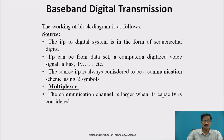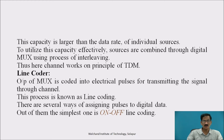Multiplexer: The communication channel has a larger capacity than the data rate of individual sources. To utilize this capacity effectively, sources are combined through a digital MUX (multiplexer) using the process of interleaving. The channel thus works on the principle of time division multiplexing.